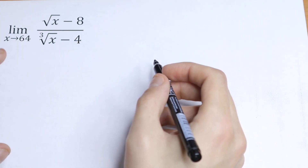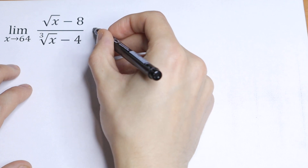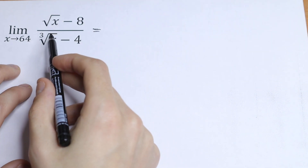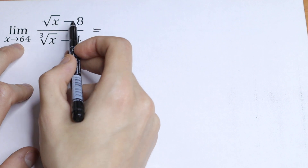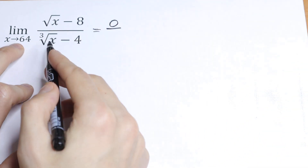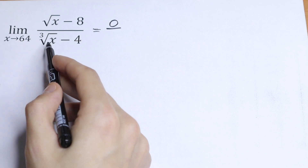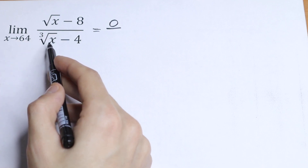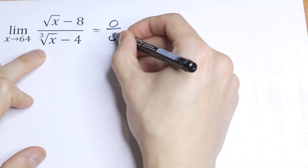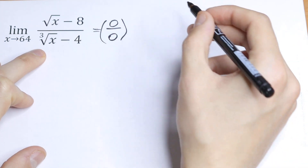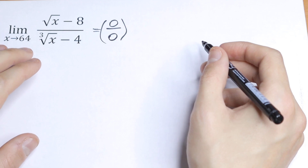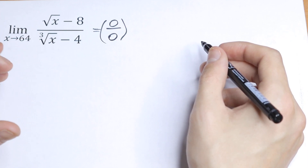One way is to use direct substitution. So let's put 64 instead of x. In the numerator, square root of 64 is 8, and 8 minus 8 will be 0. In the denominator, cube root of 64 is 4, and 4 minus 4 will be 0. So we have 0 over 0, which is undefined — we don't know what value that represents.